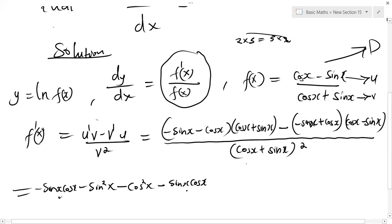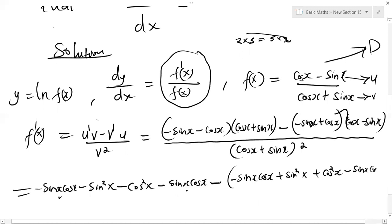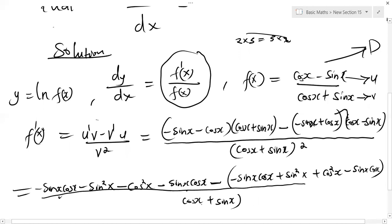Then we have a minus sign, putting the second part in a bracket and multiplying through. Taking minus sine x times cos x minus sine x gives minus sine x cos x, then positive sine squared x. Taking plus cos x times cos x minus sine x gives plus cos squared x, then minus sine x cos x. All this is divided by v squared, which is cos x plus sine x, squared.